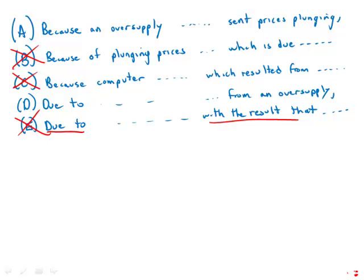'Due to' seems to be specifying the cause, but what exactly is the cause here? Did the falling prices cause the oversupply, or did the oversupply cause the falling prices? It seems like the oversupply caused the falling prices. So to say 'due to plunging prices' — there's something a bit strange about that.